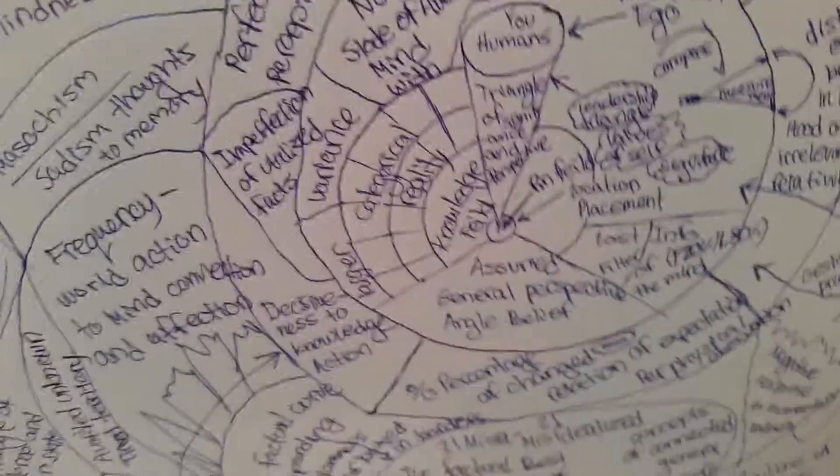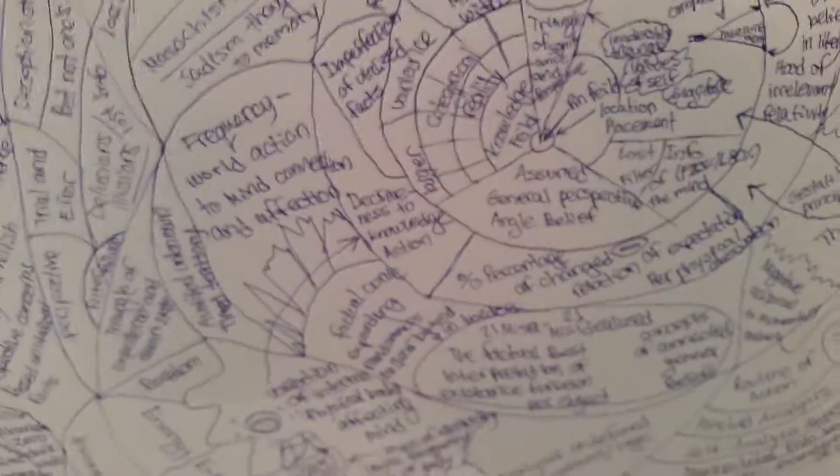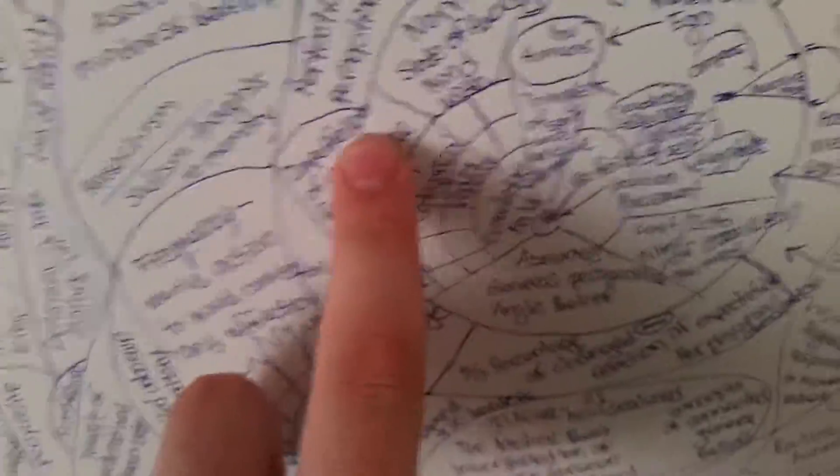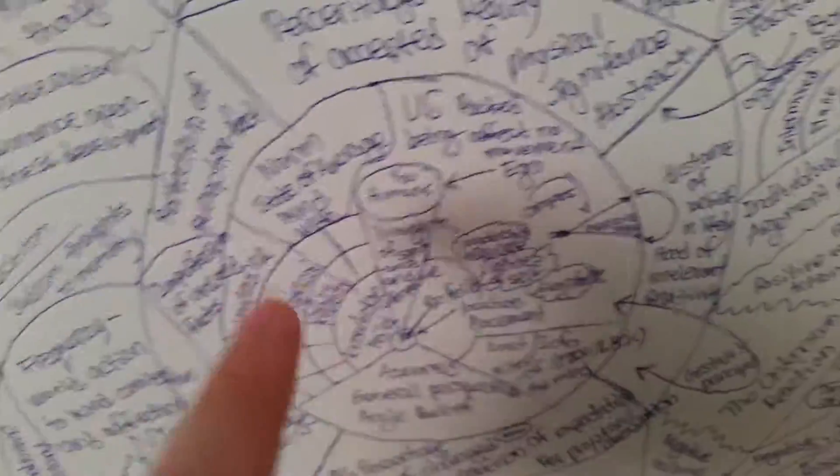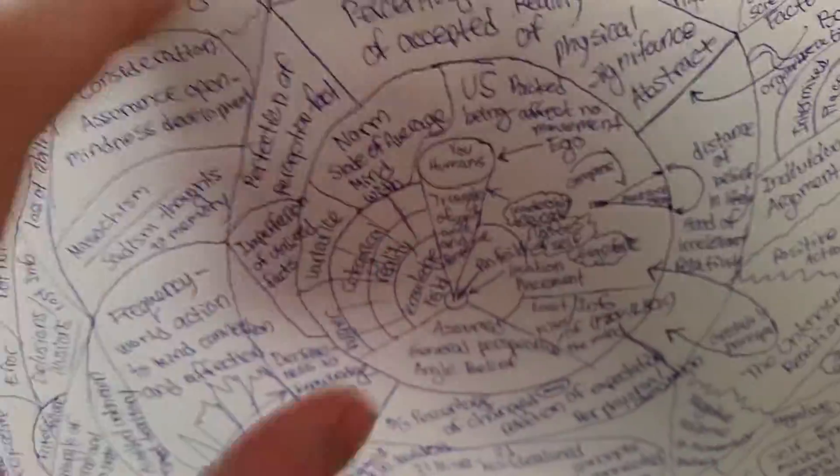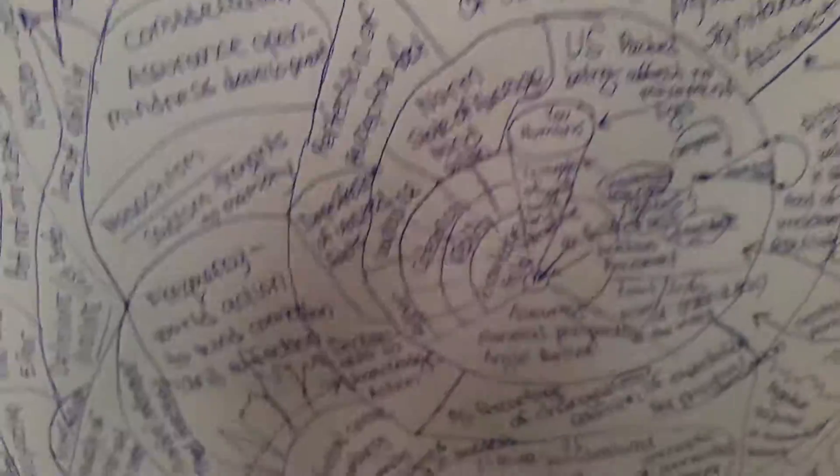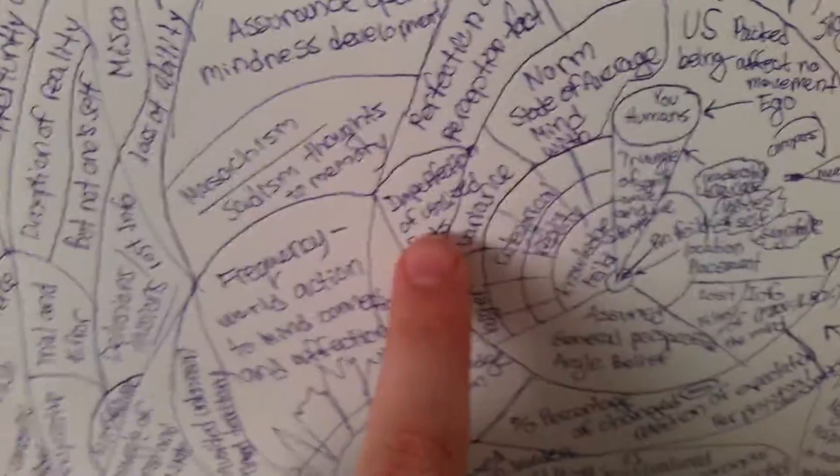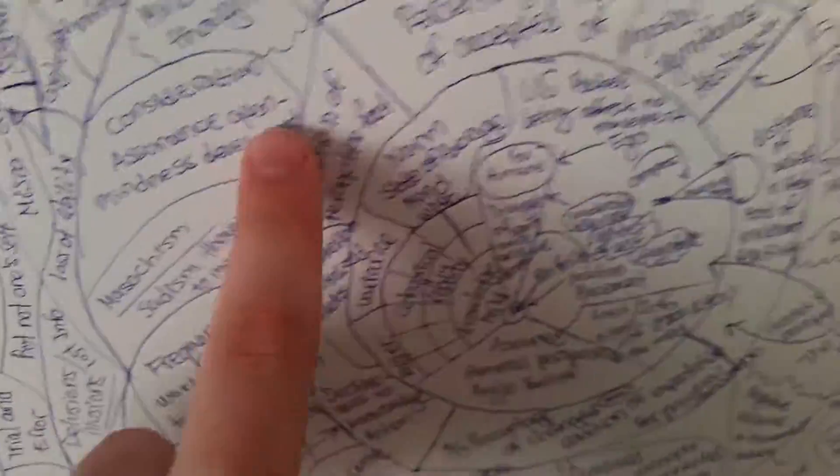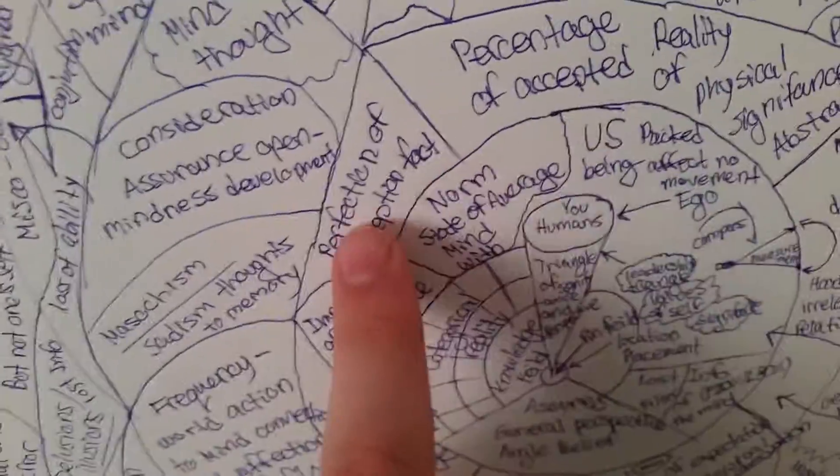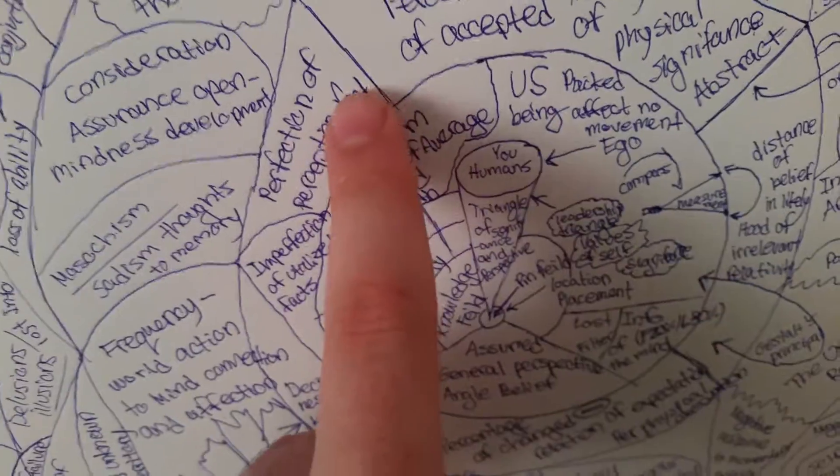But it's going to get a lot harder with all the ideas here. Okay, so then it goes larger variance, larger and larger variance norm state of average mind width. And then basically that is the different kinds of new things that you gather as you're just born as a kid, imperfection of utilized facts.